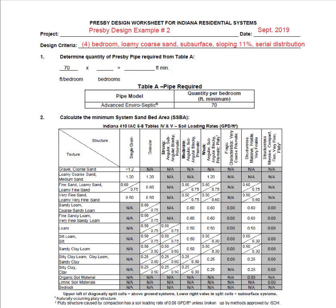Welcome to part three of the AES certification training. We're going to work through a design example using the designer's worksheet for Indiana residential systems. The design criteria is the same as design example number two in the Indiana design and installation manual. It is a four-bedroom home with loamy core sand, a subsurface system sloping at 11%, and we are using a basic serial configuration. This worksheet is a useful tool that helps ensure you have covered the necessary steps for designing AES systems. Now let's get started.